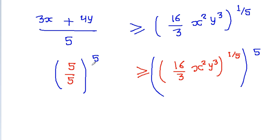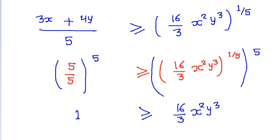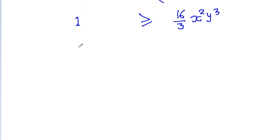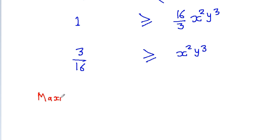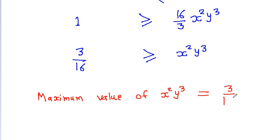So 1 to the power 5 is 1, and that should be greater than or equal to (16/3) · x²y³. Therefore, 3/16 ≥ x²y³, meaning the maximum value of x²y³ is equal to 3/16.